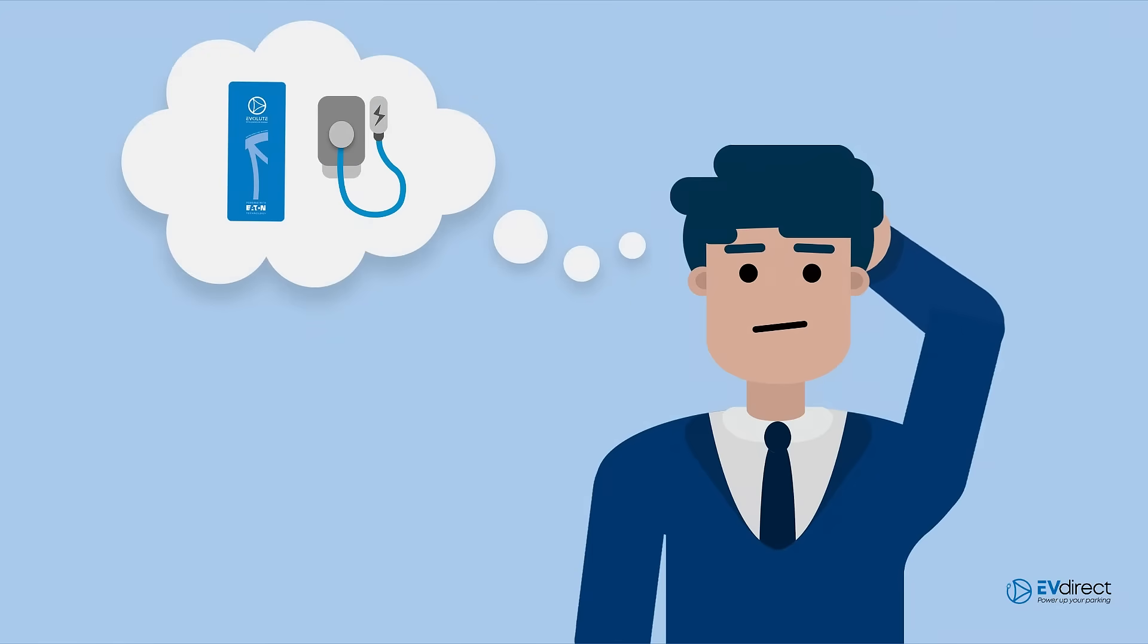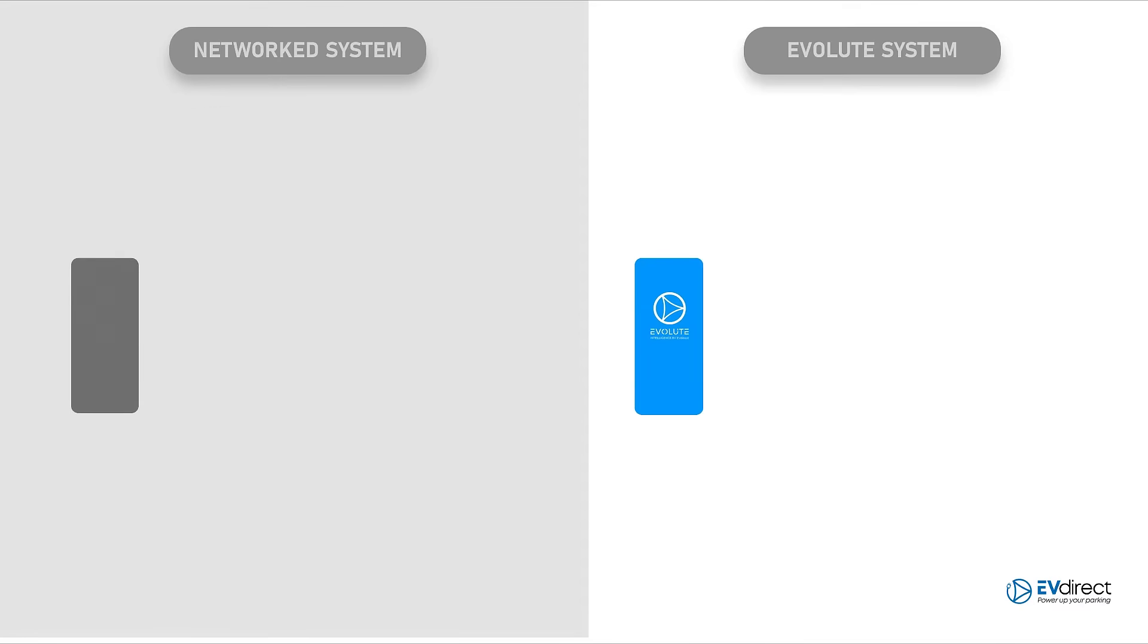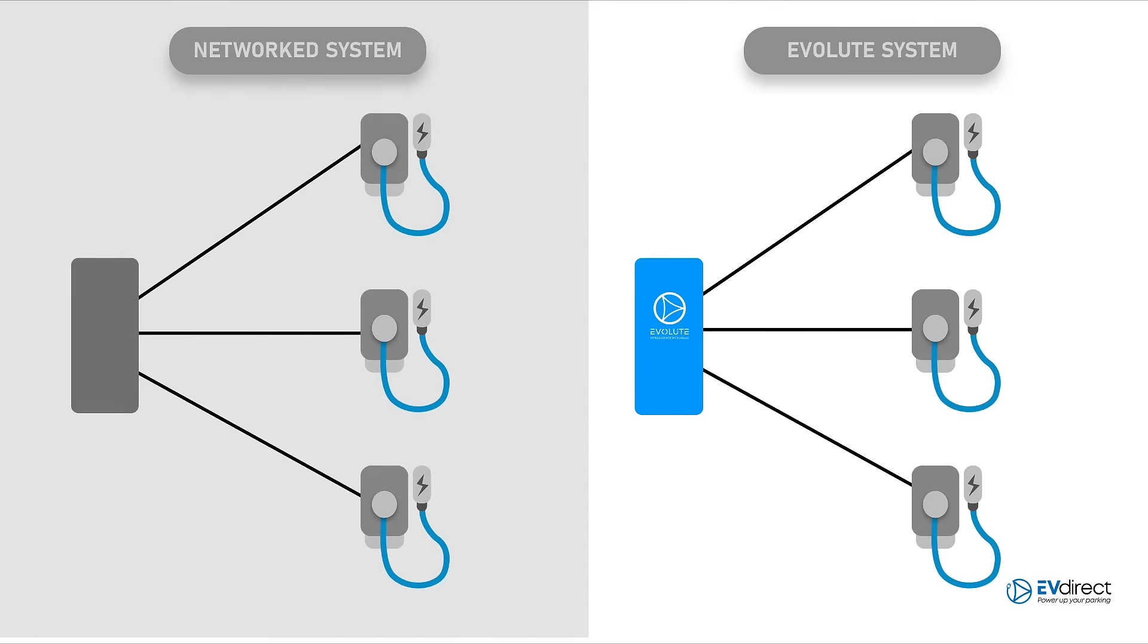So what type of smart EV infrastructure should you get? There are two types of smart charging infrastructure: the network system and the Evolute by EV Direct smart panel system. The network system works by having the charging stations communicate with each other either through its proprietary protocol or OCPP, essentially putting all the brains into the station.